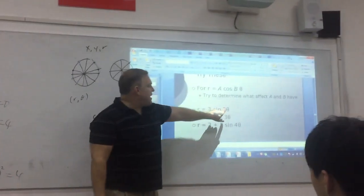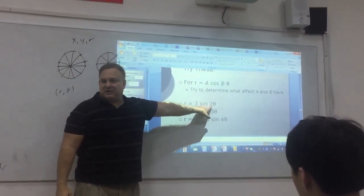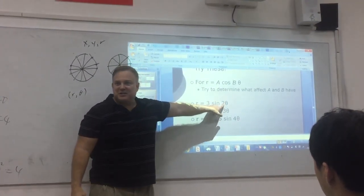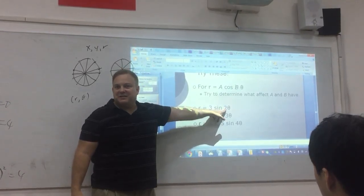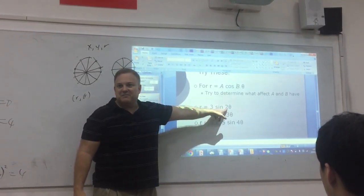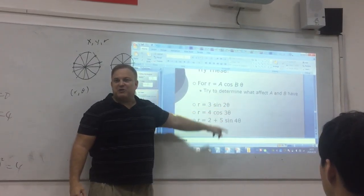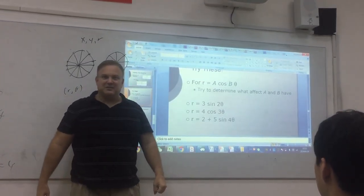Think about what happens when this number gets bigger. That affects the period, right? The bigger this number is, what happens to the period when this number gets bigger? The period gets smaller, right? Which means it kind of fluctuates faster.